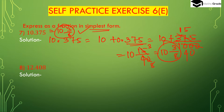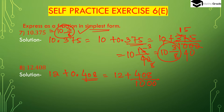Question number 8: 12.408. We can write 12 plus 0.408. After the decimal place there are 3 digits, so we have to divide with 3 zeros — that is 1000.